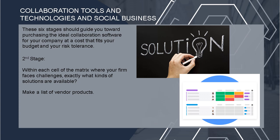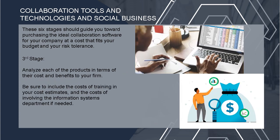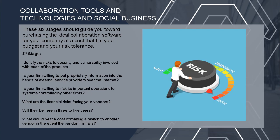Second stage: within each cell of the matrix where your firm faces challenges, identify what kinds of solutions are available and make a list of vendor products. Third stage: analyze each product in terms of its cost and benefits to your firm — be sure to include the cost of training and the cost of involving the information system department if needed. Fourth stage, risk: identify the security risks and vulnerabilities involved with each product. Is your firm willing to risk its important operations to systems controlled by other firms? Also consider what will happen in three to five years and what the cost of switching to another vendor would be if a vendor firm fails.